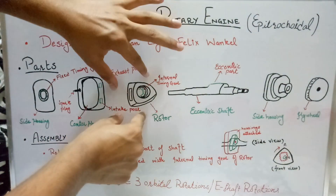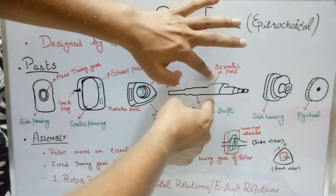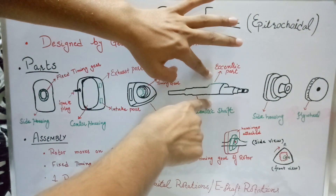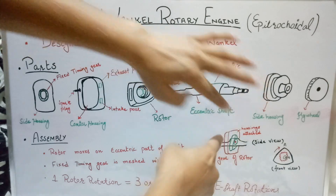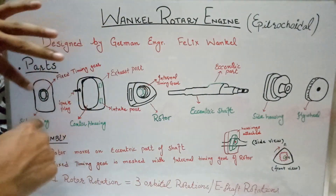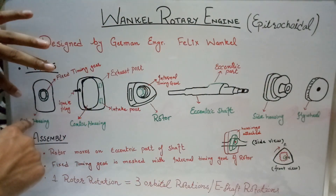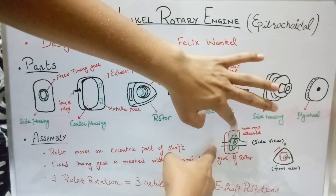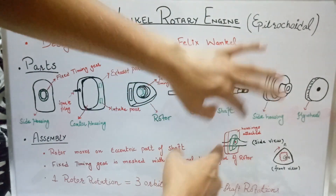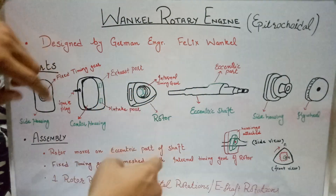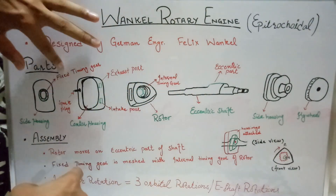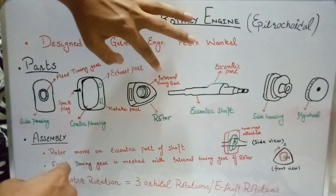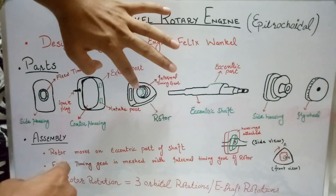The rotor sets itself on the eccentric part of the eccentric shaft. The center housing and side housings are then attached together by this assembly. The fixed timing gear on the side housing meshes with the internal timing gear of the rotor.